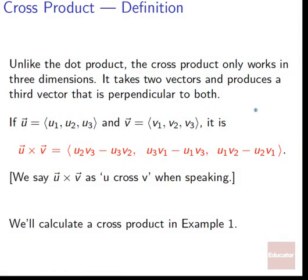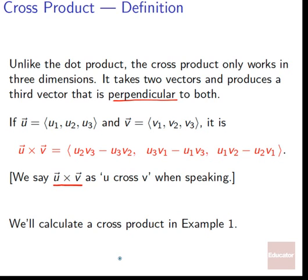Now let's talk about the cross product. Unlike the dot product, the cross product only works in three dimensions. It takes two vectors and produces a third vector that is perpendicular to both. So if u = (u1, u2, u3) and v = (v1, v2, v3), then u cross v equals (u2·v3 − u3·v2, u3·v1 − u1·v3, u1·v2 − u2·v1). We say it as "u cross v".